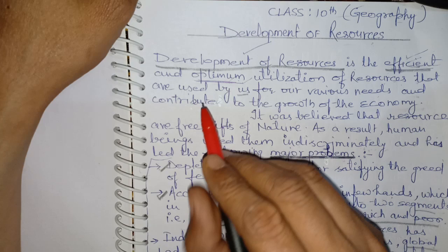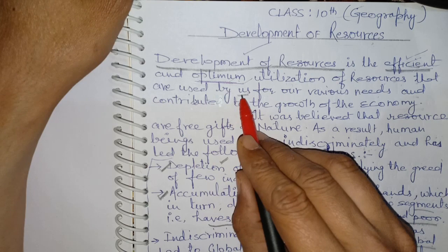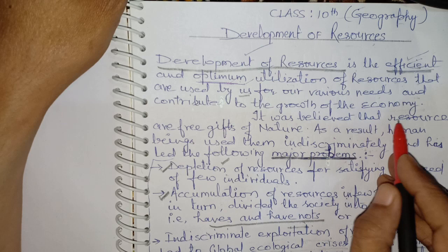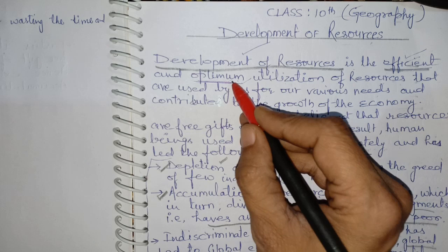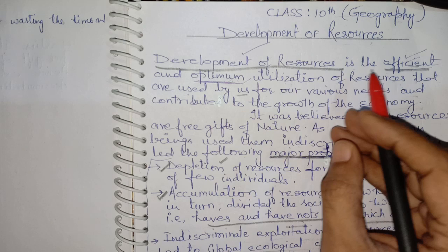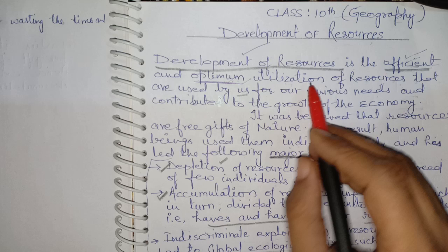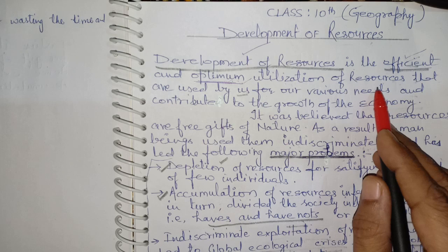Development of Resources means the efficient and optimum utilization of resources that are used by us for our various needs and contribute to the growth of the economy. There are two key words here — efficient and optimum. Efficient means able to work well without wasting time, energy, or resources. Optimum means achieving the best possible results from resources. Together, these two words define the concept of Development of Resources.